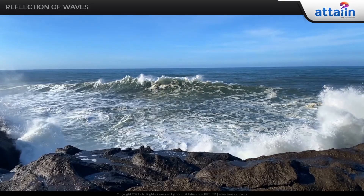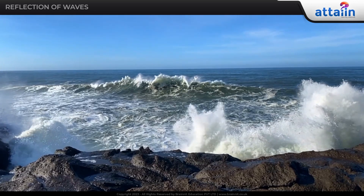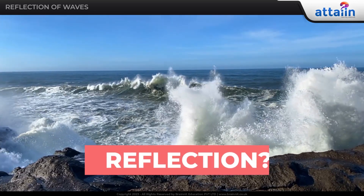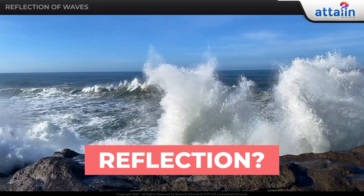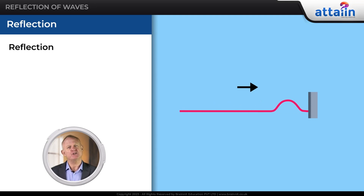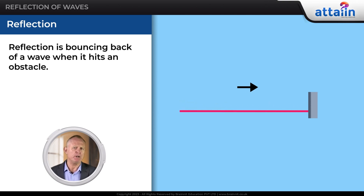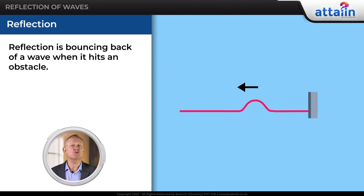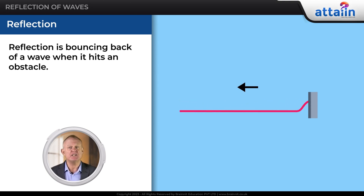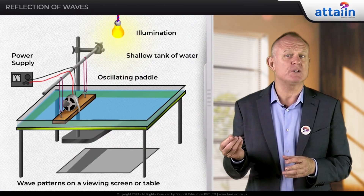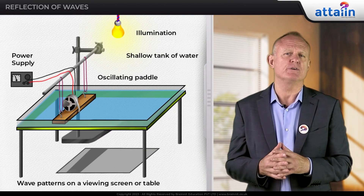What is reflection? Reflection is the bouncing back of a wave when it hits an obstacle. When a single pulse is created on a string and it hits the boundary, we see the pulse reflecting back towards our hand. This is known as reflection of waves. We can use a ripple tank to show waves being reflected.